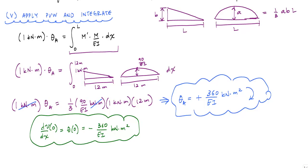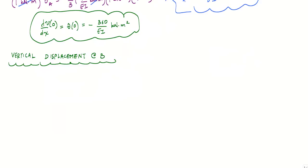So now we're going to apply the principle of virtual work to calculate the vertical displacement at point B. And that means we're repeating steps 3, 4, and 5, and step 3 is to apply the external virtual unit load.